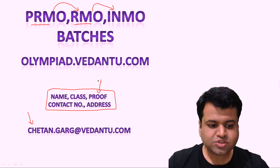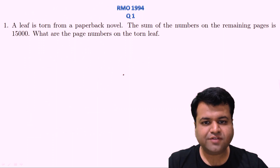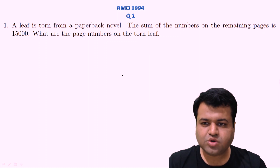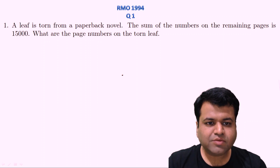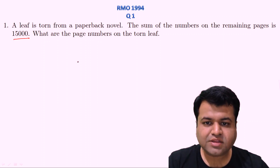So let's start our session. This is the first question of year 1994, and it is a question of number theory. The question states: if a leaf is torn from a paperback novel, the sum of the numbers on the remaining pages is 15,000. What are the page numbers on the torn leaf?